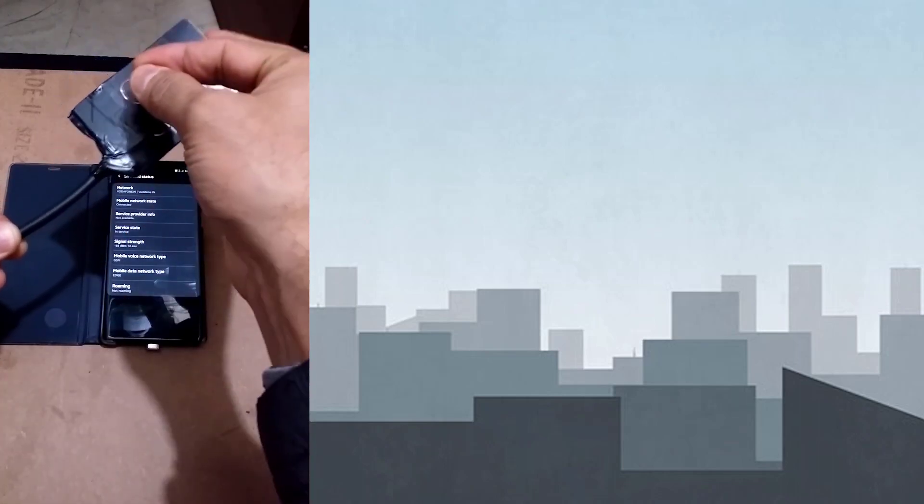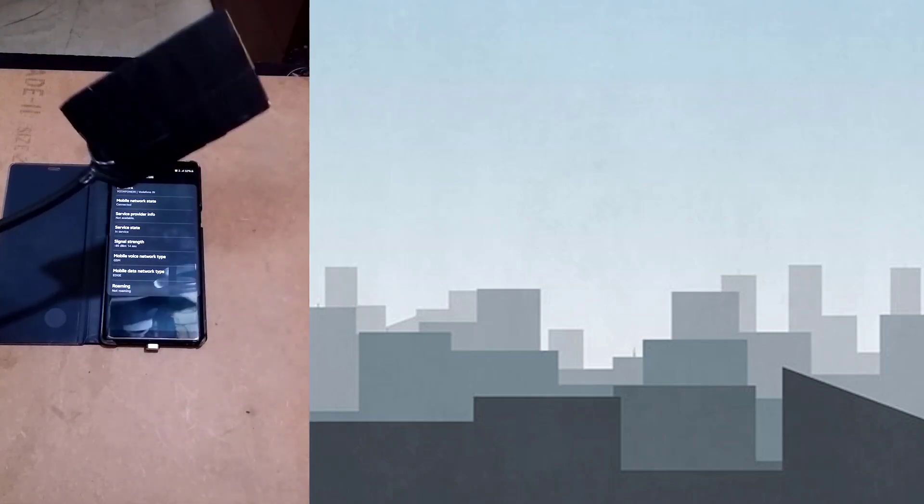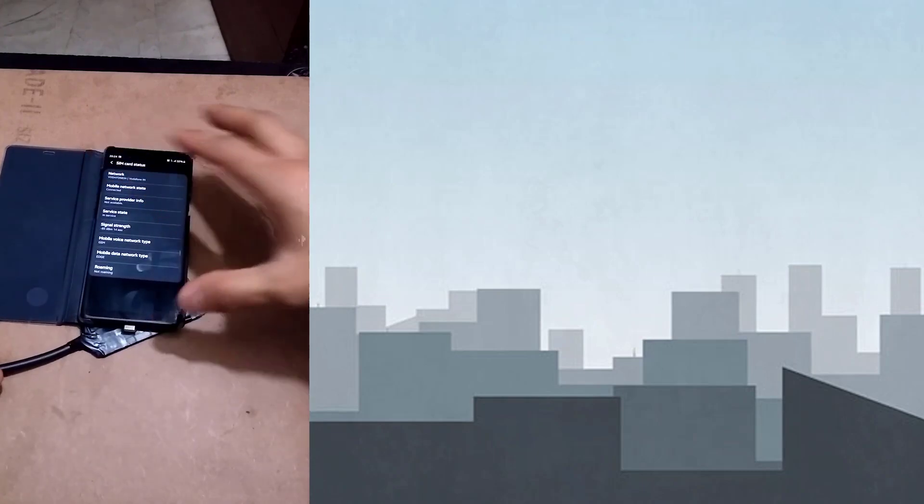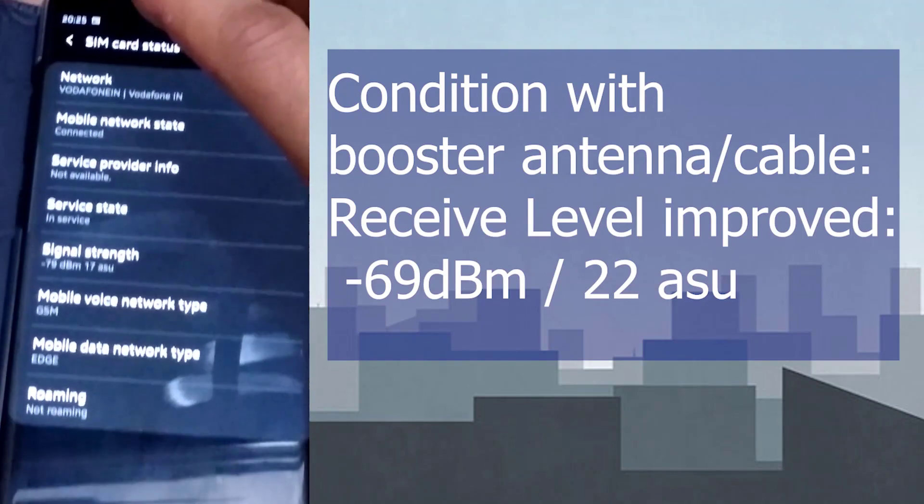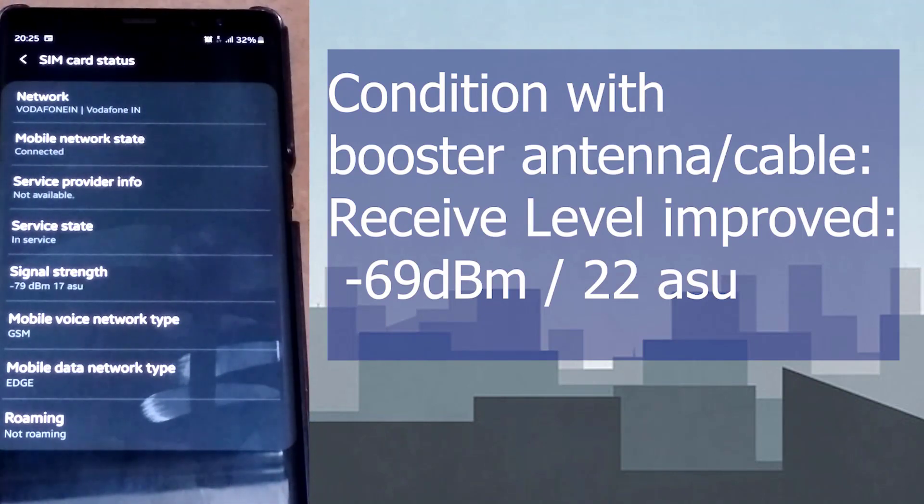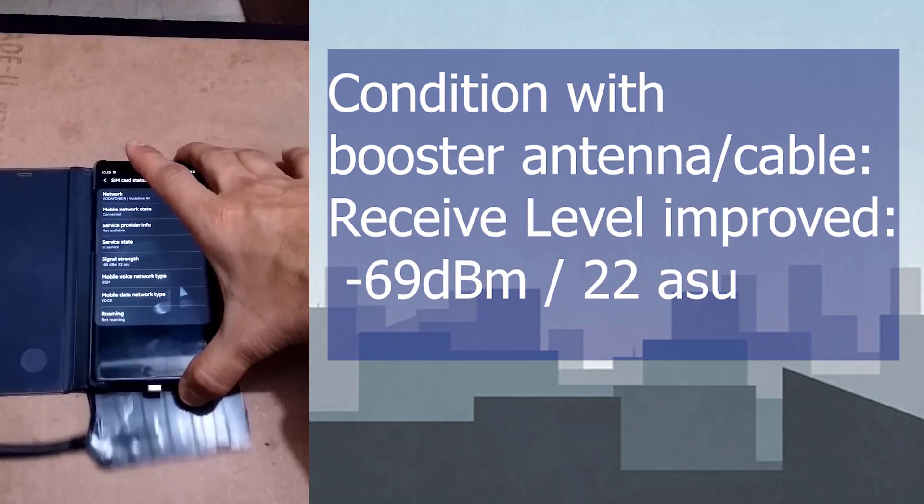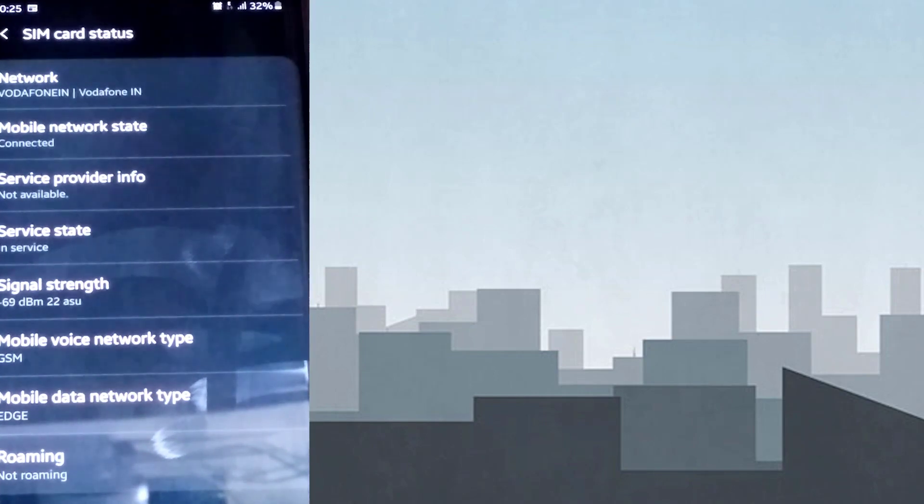Within a second of placing the phone over this receiver cable, the reception shows improvement. You can see here the receive level improves up to minus 69 dBm or 22 ASU, which is a gain of around 28 dBm, which is pretty great for a homemade antenna. Removing the cable throws the receive level back to the original minus 97 dBm or 8 ASU.